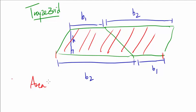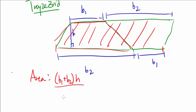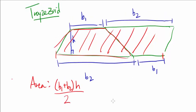So the area of the parallelogram is the length, which is base 1 plus base 2, times the height. And since for the trapezoid, we're only looking at half of the parallelogram, the area is going to be base 1 plus base 2 times height divided by 2. Let me give you an example.